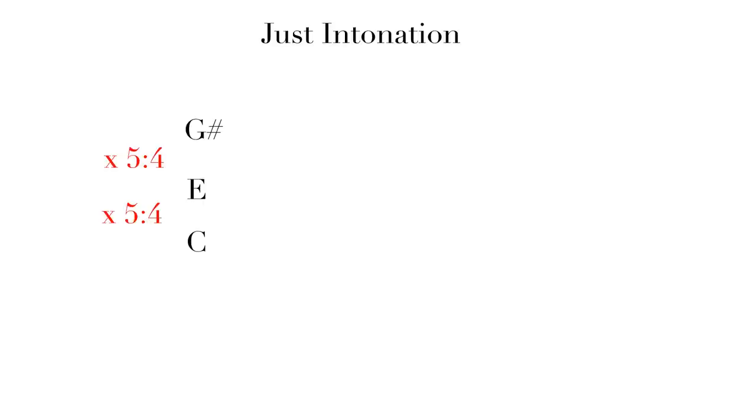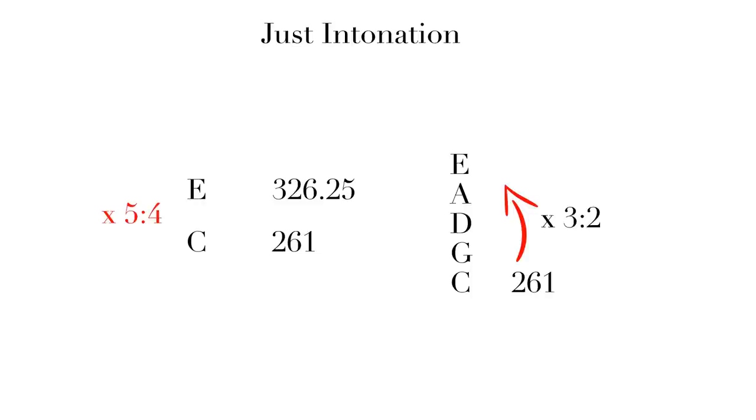If we start as C with a frequency of 261 and then we multiply 5 to 4, we get an E natural with a frequency of 326.25. However, if we start at the same C and multiply 3 to 2 until we get around to E natural and then divide so that those two E's are in the same octave, whoops, we end up with 330 hertz, a difference of 22 cents.